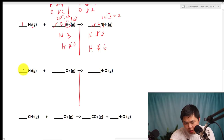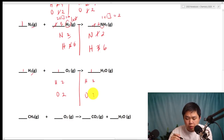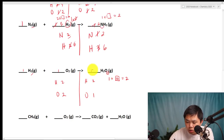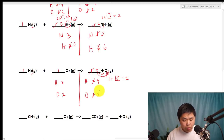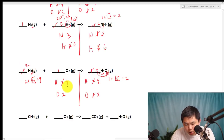Let's try two more. Assume all coefficients are one. We have hydrogen and oxygen on both sides. On the reactant side: two hydrogen and two oxygen. On the product side: two hydrogen and one oxygen. The hydrogen is already balanced, so we go to the oxygen. One times what number gives us two? That's two. But changing this to two affects the hydrogen as well — now it becomes four. So two times what number equals four? Two times two gives four. Balanced.